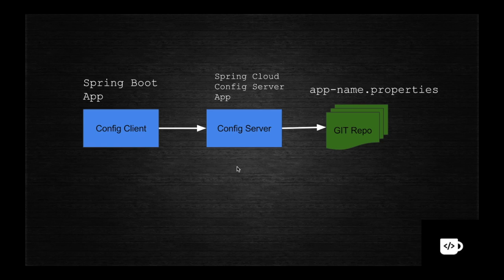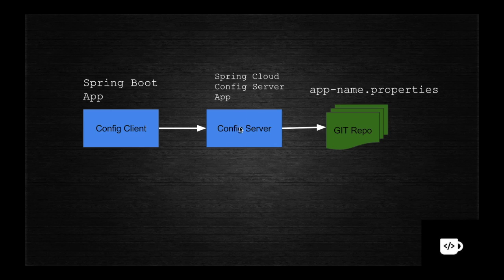If we change something in the app's property file in the Git repository, how does the running process know? If the client had to go to the server every time to get data, that would be a performance hit. So the Spring Cloud team designed it so the config server loads the configuration only once.